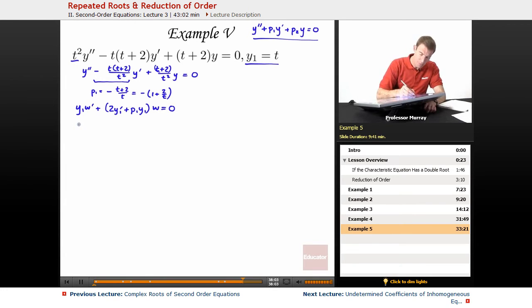We can fill it in and then solve a first-order differential equation for w. So I'm going to fill in everything I know. y₁ is t. So that's tw' plus, now, 2 times y₁'. y₁' is just the derivative of t. So that's 2 times 1 plus p₁ is negative. So I'll do negative 1 plus 2/t. And y₁ is t times w is equal to 0.